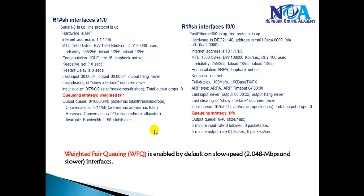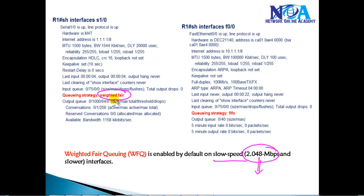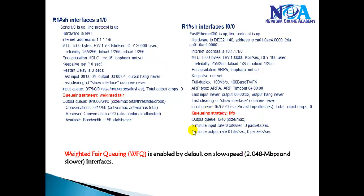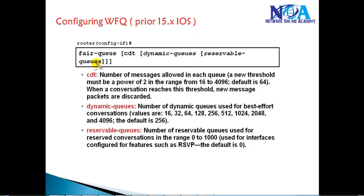On serial interfaces, if the link speed is 2 Mbps or less, the default queuing mechanism is weighted fair queuing. You can verify this with the 'show interface' command and the interface name. For high-speed links like Ethernet or Fast Ethernet above 2 Mbps, the default is FIFO. To change the default queuing mechanism to weighted fair queuing, simply enable the 'fair-queue' command — prior to IOS 15 versions, that single command is all that's needed.